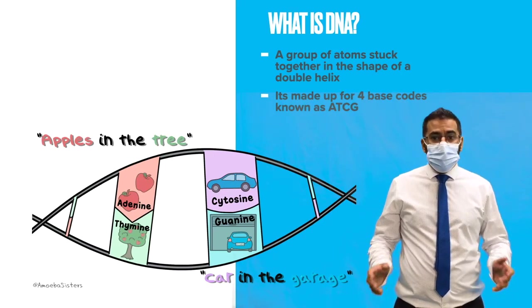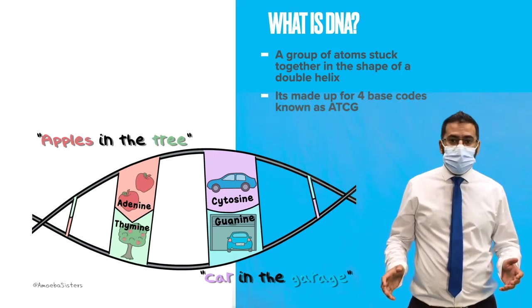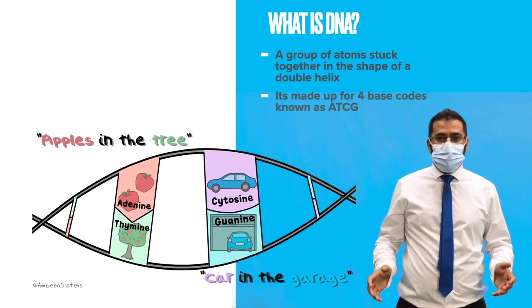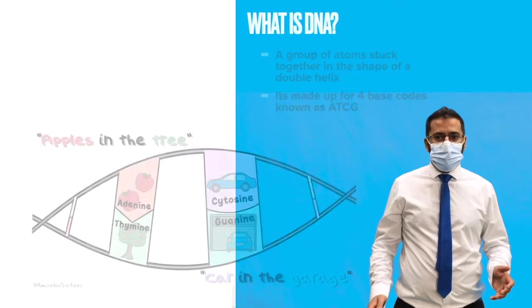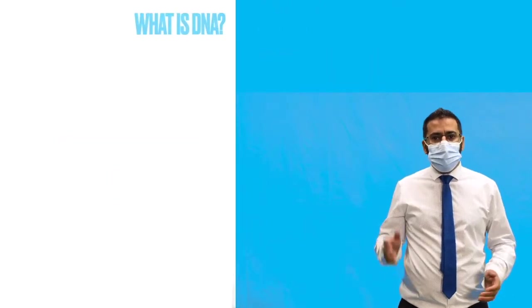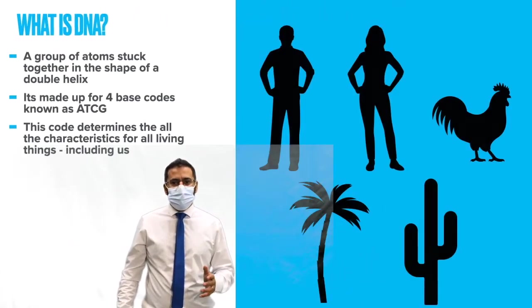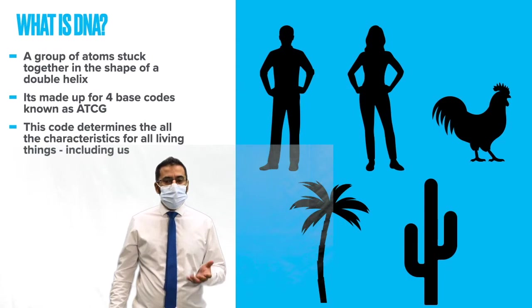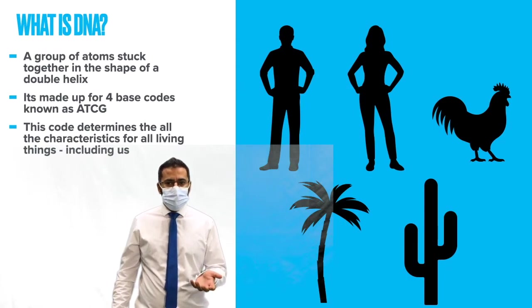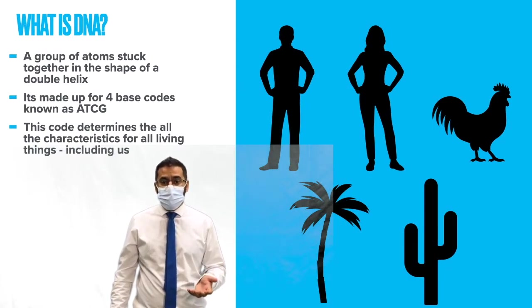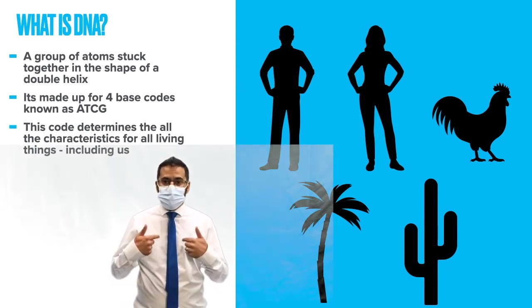A quick way to remember these is the mnemonic: apples in the tree, car in the garage. DNA code actually determines all the characteristics for all living things, including us.